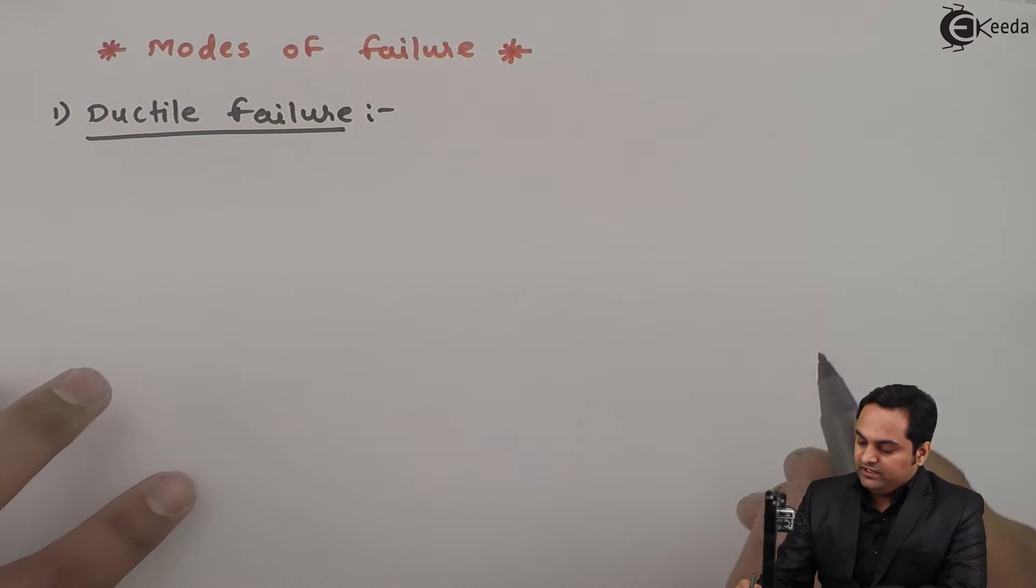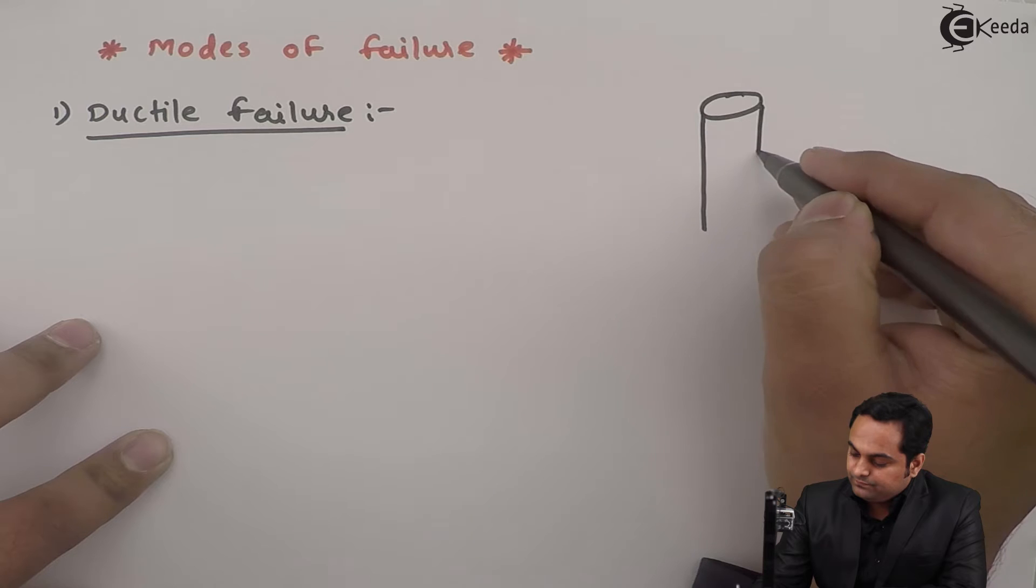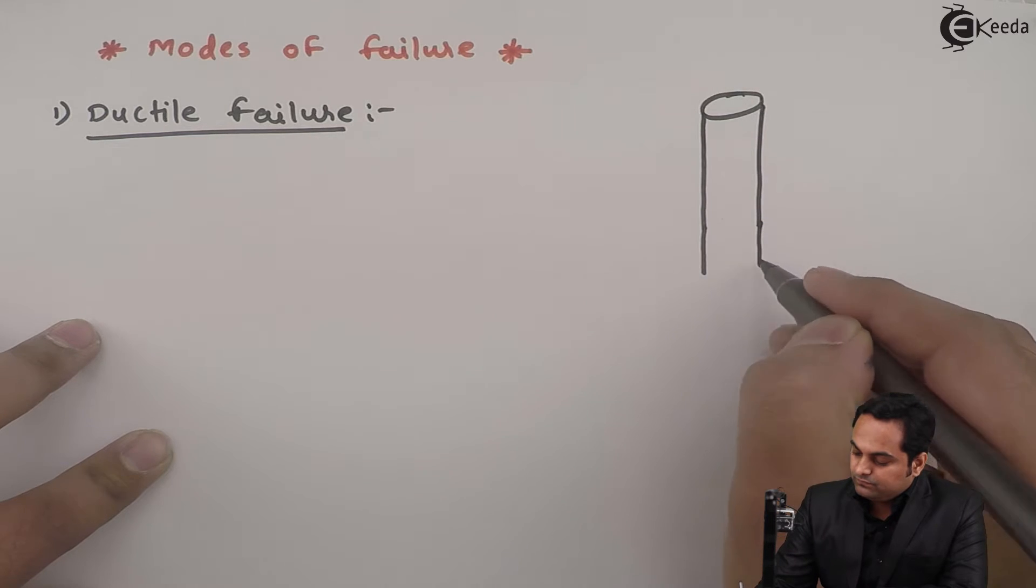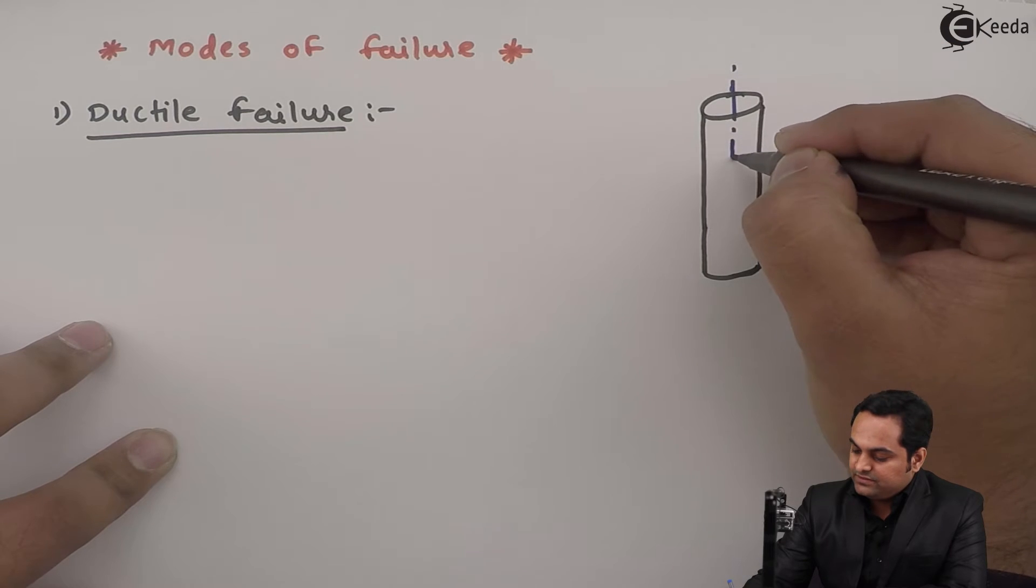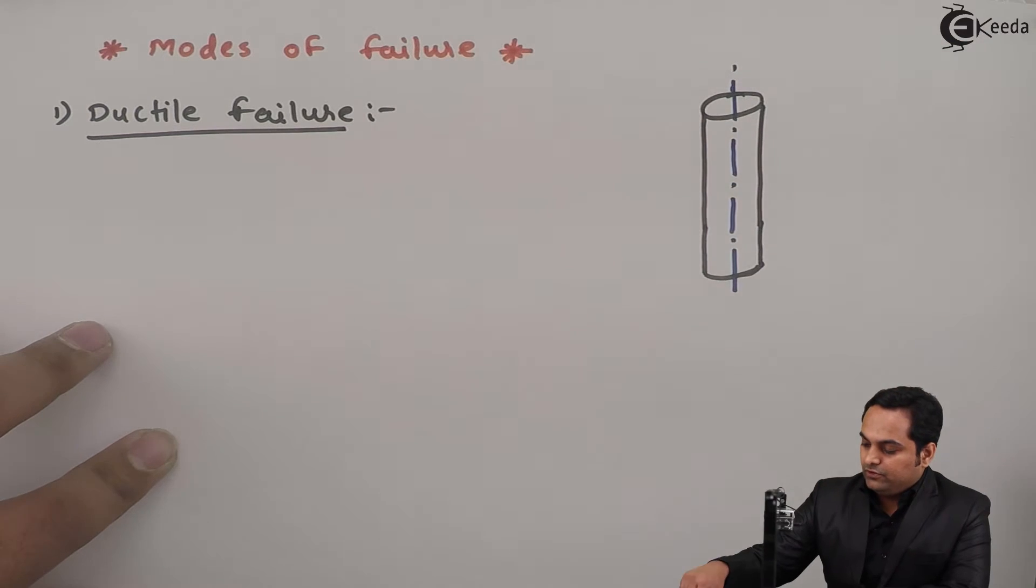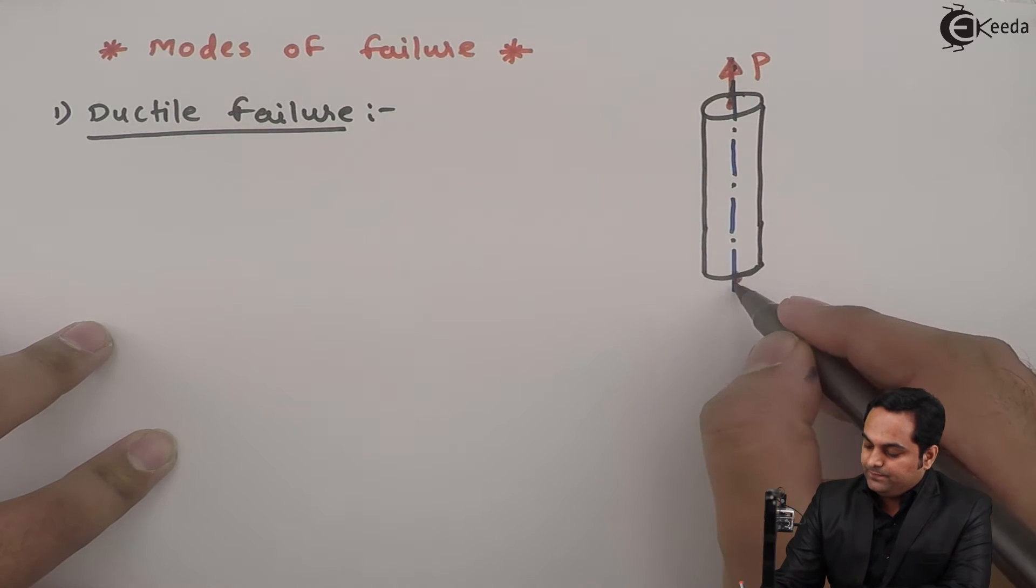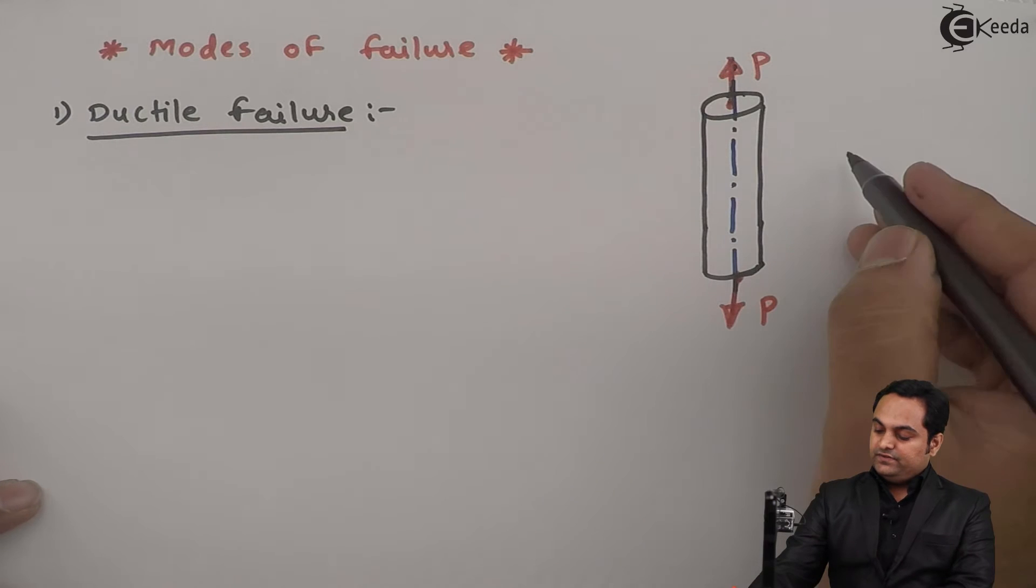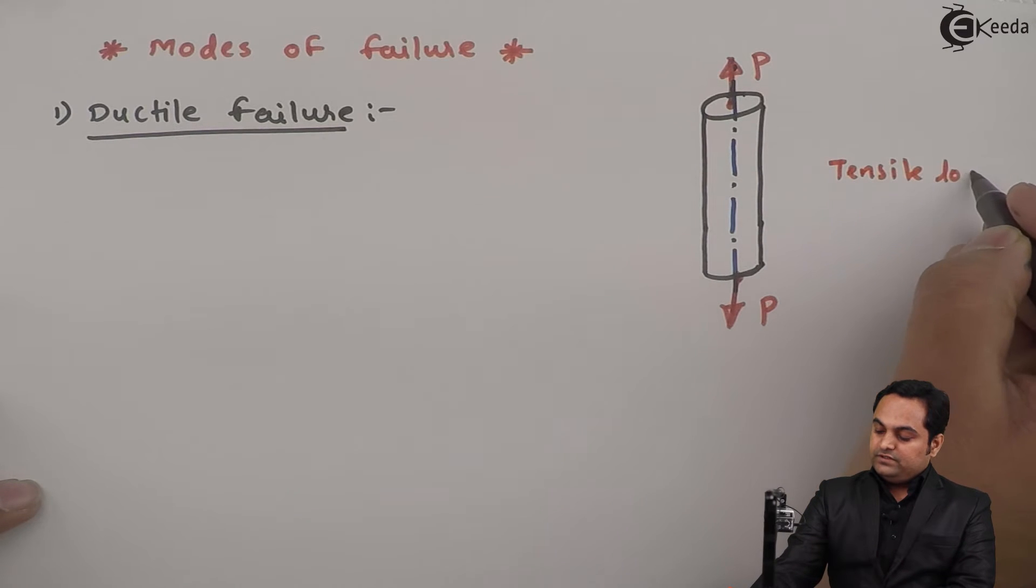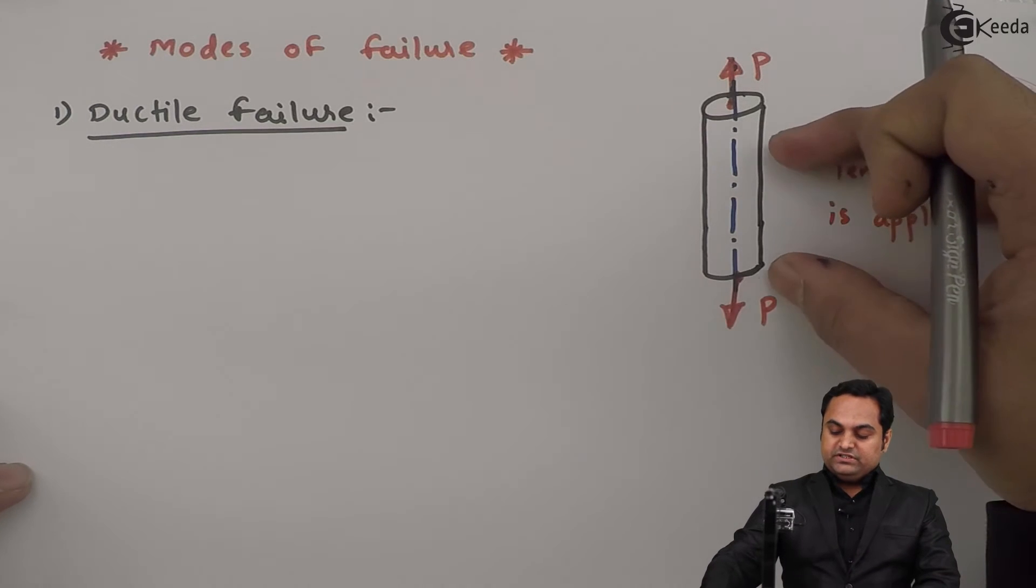In case of ductile failure, let us consider a rod. Through the axis of the rod, load is applied and this load is tensile. Under the action of this tensile load, what changes are we going to see?